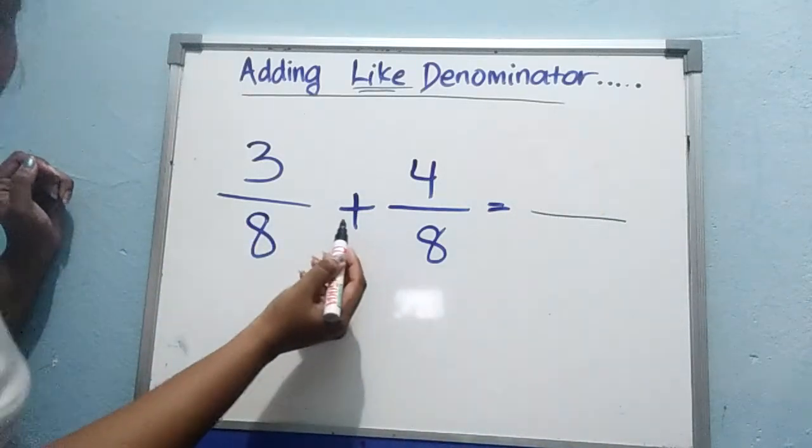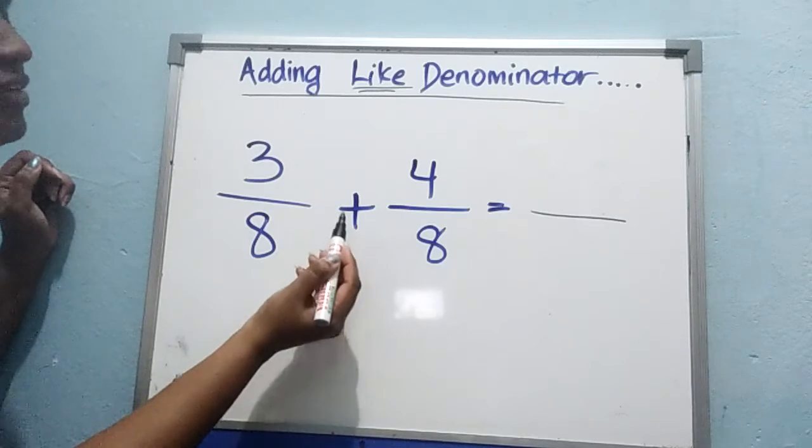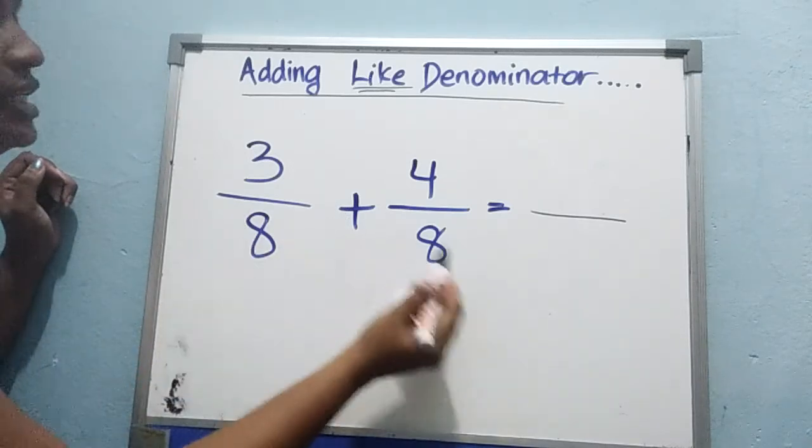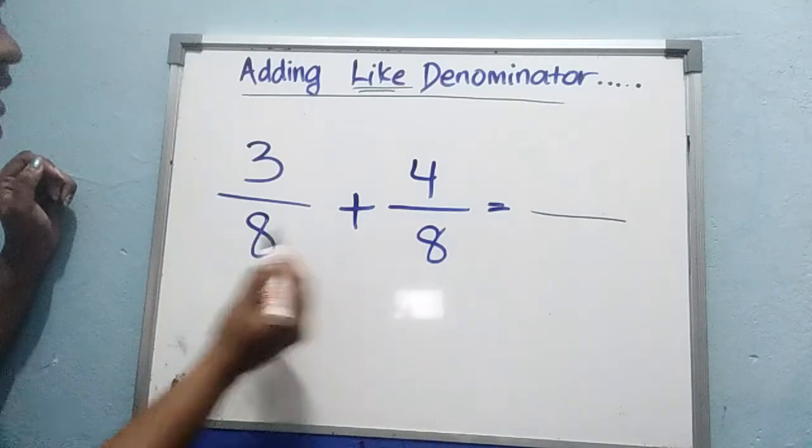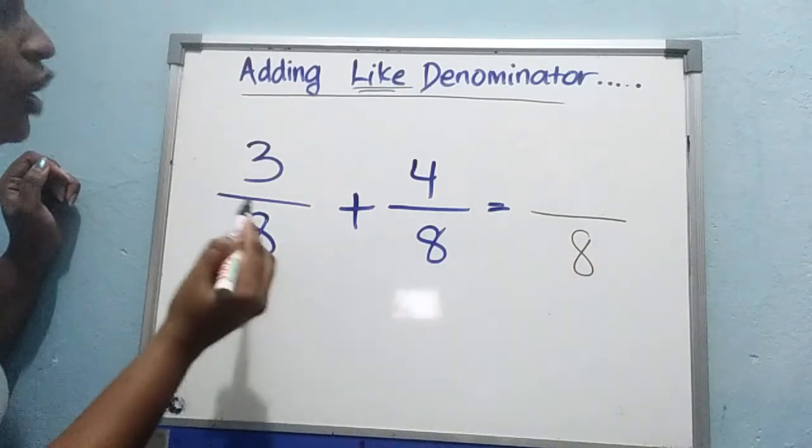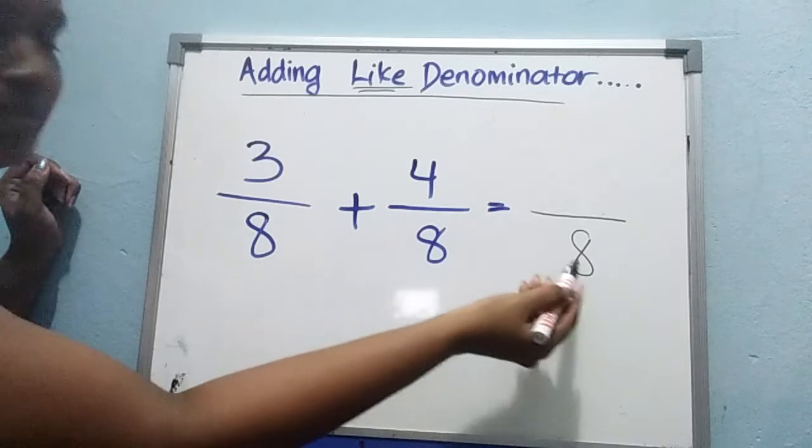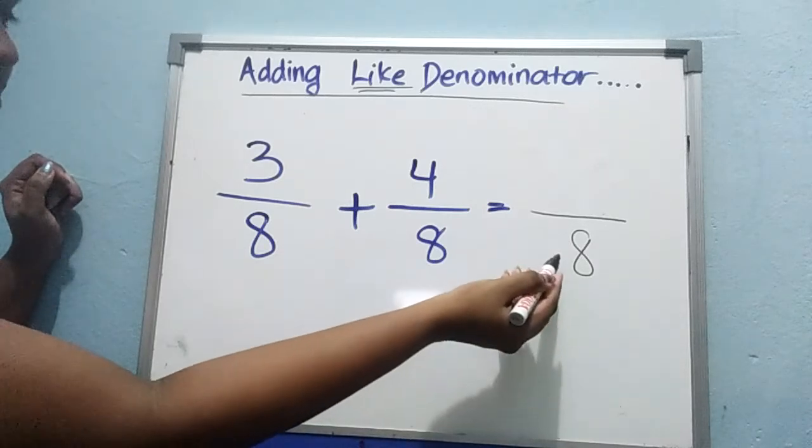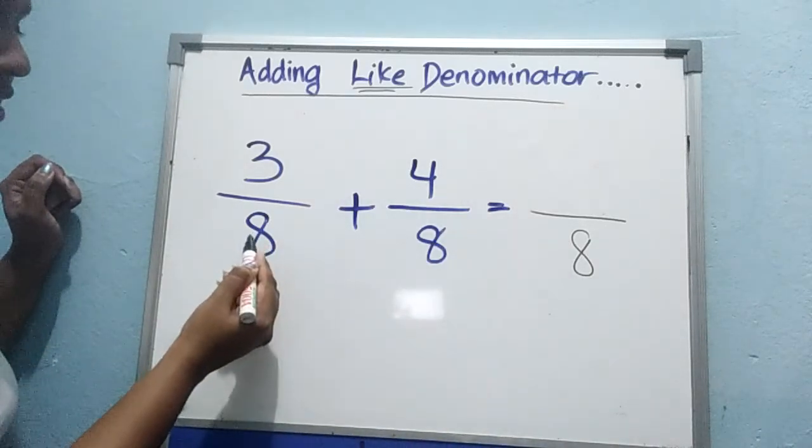I know you have a plus here, but never ever add the denominators. If you have 8 here and 8 here, just copy 8. Do not take 8 and add it. Don't tell me it's 16, okay? It's not correct.